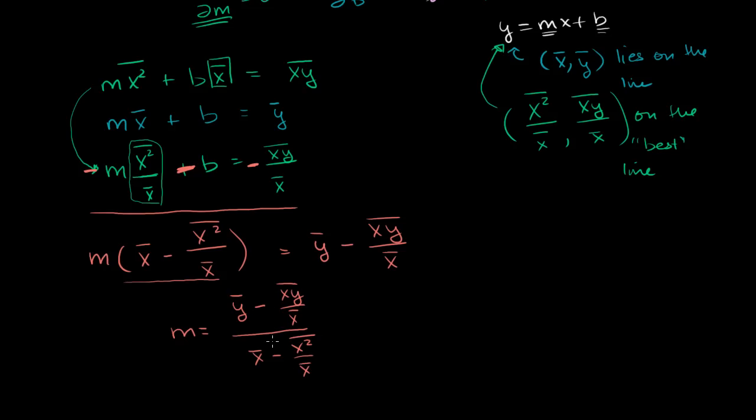Now notice, this is the exact same thing that you would get if you found the slope between these two points over here. Change in y, so the difference between that y and that y is that right over there, over the change in x's. The change in that x minus that x is exactly this over here.